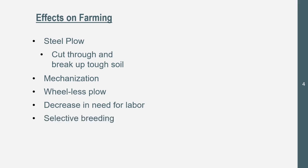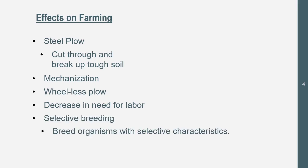And we got selective breeding, which is basically breeding organisms with selective characteristics with an expected outcome. For example, if this mother cow lived a long life and gave a bunch of milk, and this male cow lived a long life and gave a bunch of beef, you'd breed them together for great beef or milk. So selective breeding — that's an example of it. And those are the effects on farming.